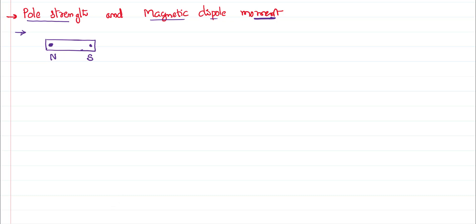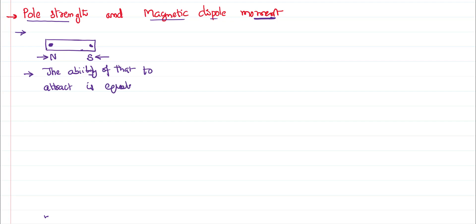The pole that shows the north is called the north pole. The pole that shows the south is called the south pole. Though there are two different poles — north and south — the ability of either pole to attract other magnetic materials is equal. That ability to attract other magnetic materials is called pole strength, and it is shown with the letter small m.